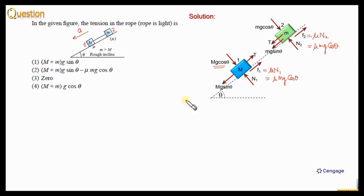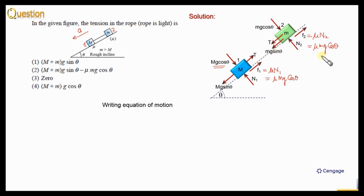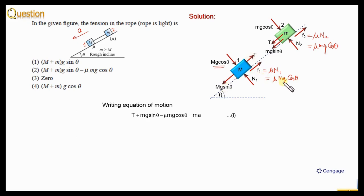Now we can write the equations of motion. First, the equation of motion for block number two: T + mg sinθ − μMg cosθ = ma. This is equation number one. Similarly, the equation of motion for block number one: Mg sinθ − T − μMg cosθ = Ma.